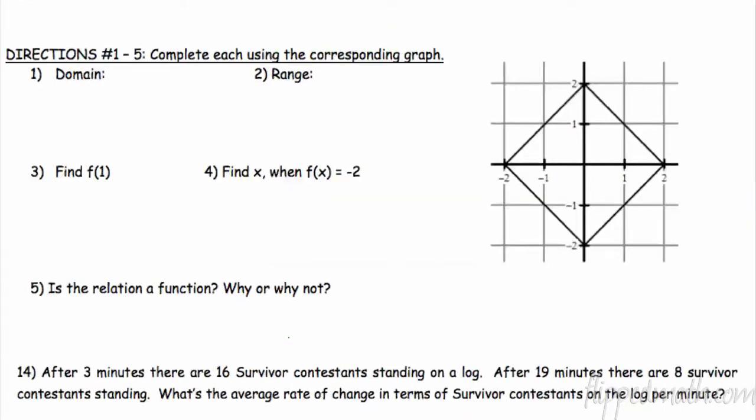All right, let's get to it. Domain: all my x's. Let's take a look. My furthest x I have is negative 2 and it's included, and positive 2 is included. So negative 2 is less than or equal to x is less than or equal to positive 2.